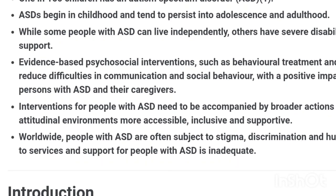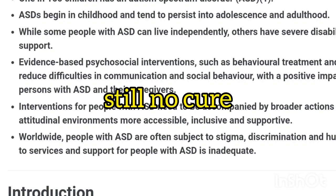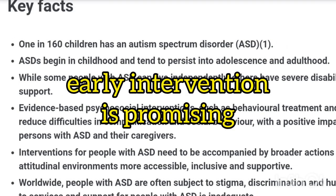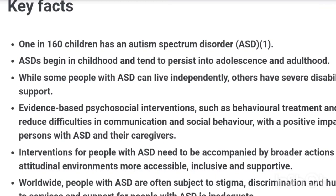One in 160 children has ASD. ASD begins in childhood and persists into adolescence and adulthood. There is no cure for autism spectrum disorder, but early intervention can really guarantee good and positive effects in the long run. Evidence-based psychosocial interventions such as behavioral treatment and parental skills training programs are very important. If you are a parent with a child having autism spectrum disorder, you need to be patient and learn which clinics and therapies you can bring your child to for physical and social interventions.